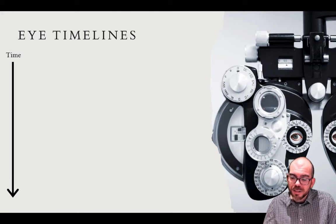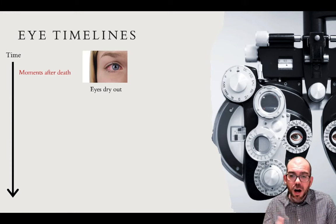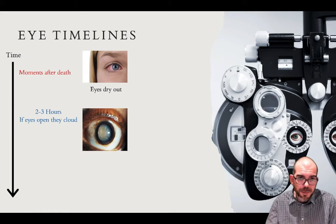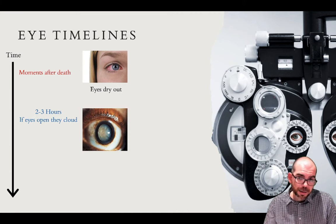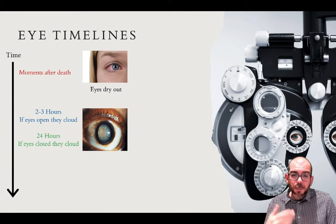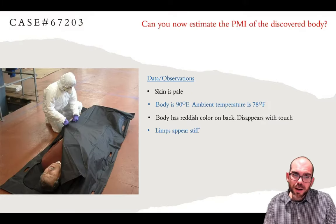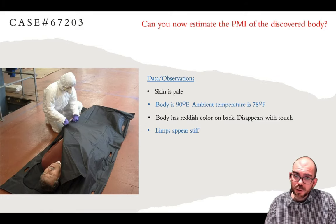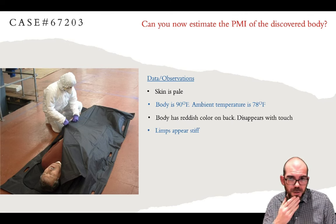We can also use the eyes to establish a timeline. Moments after death, the eyes begin to dry out as the body stops producing moisture. Two to three hours after death, the eyes will begin to appear cloudy if they were open at the time of death. If the eyes were closed, it can take up to 24 hours for them to begin to cloud. Returning to case 67203: the skin is pale, body temperature is 90°F with ambient temperature of 78°F, there is reddish color on the back that disappears when touched, and the limbs appear stiff. You should now be able to estimate the PMI of this individual.